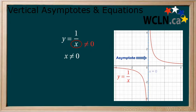Okay, where x equals 0 in the denominator is where the asymptote is.